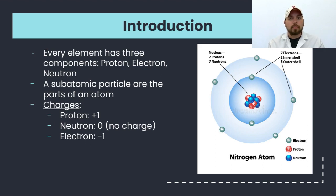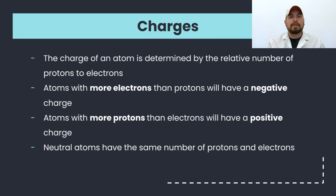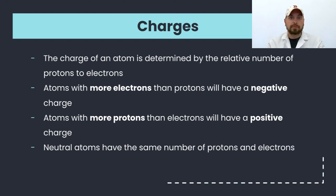But when an atom becomes an ion, what ends up happening is you have an imbalance of the number of protons and electrons. In the event you have more electrons than protons, the atom is going to be negatively charged. And in the event there are more protons than electrons, it's going to be positively charged.